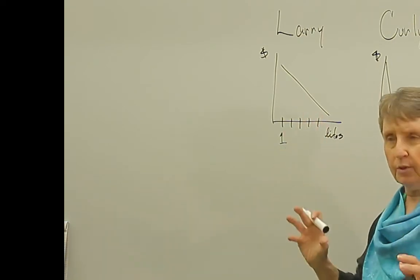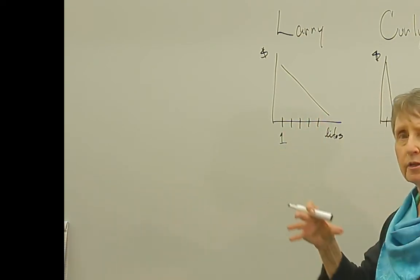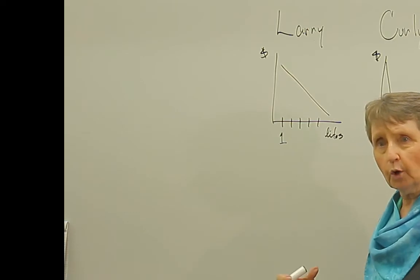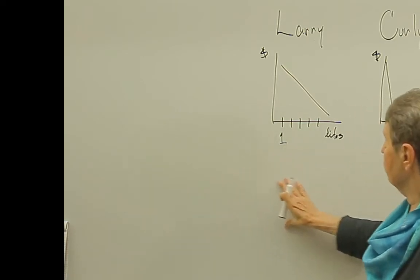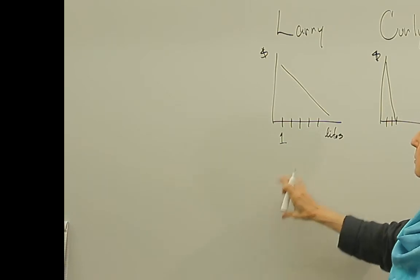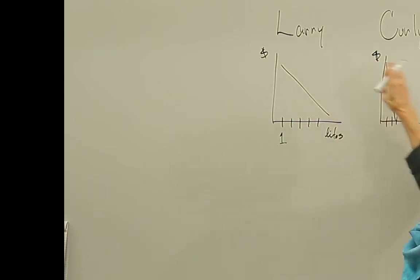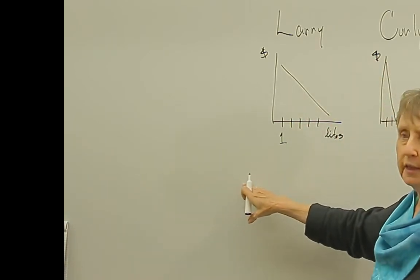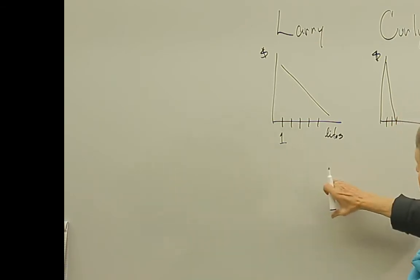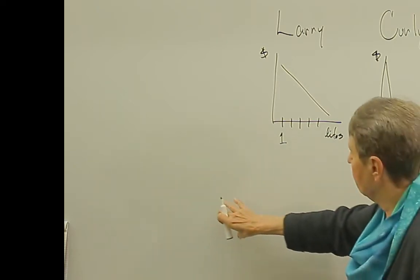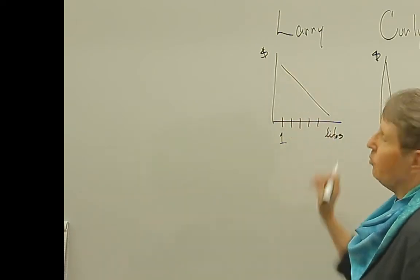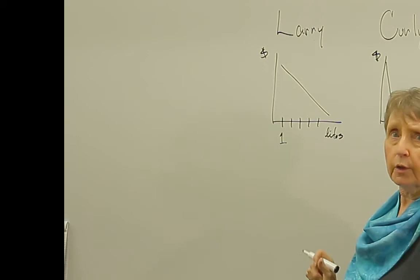This is exactly opposite of the way we have always constructed demand curves up to this point. The way we've constructed demand curves up to this point, for example, apples. We were doing the demand for apples for Larry, Curly, and Moe. We would say, well, at a dollar, how many apples would Larry buy? At a dollar, how many apples would Curly buy? At a dollar, how many apples would Moe buy? So then we'd say one dollar and we'd add these up. We'd sum them up horizontally.